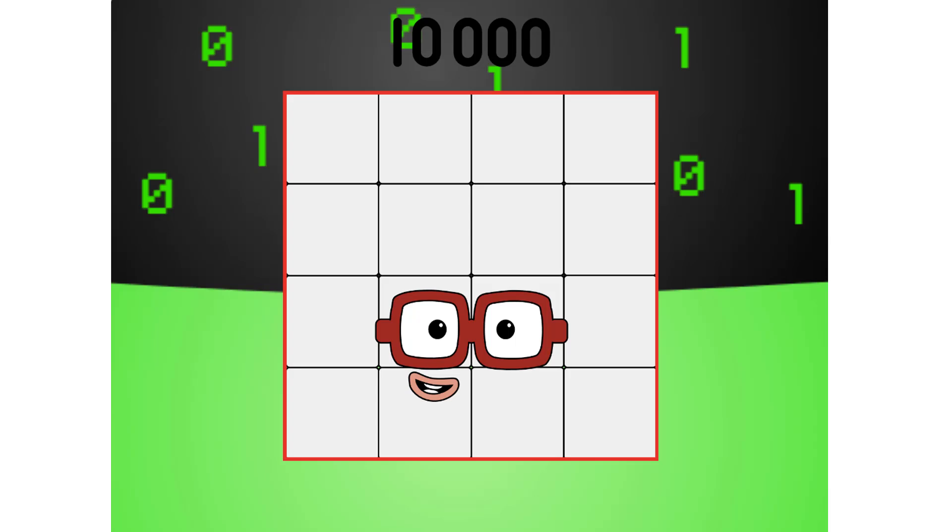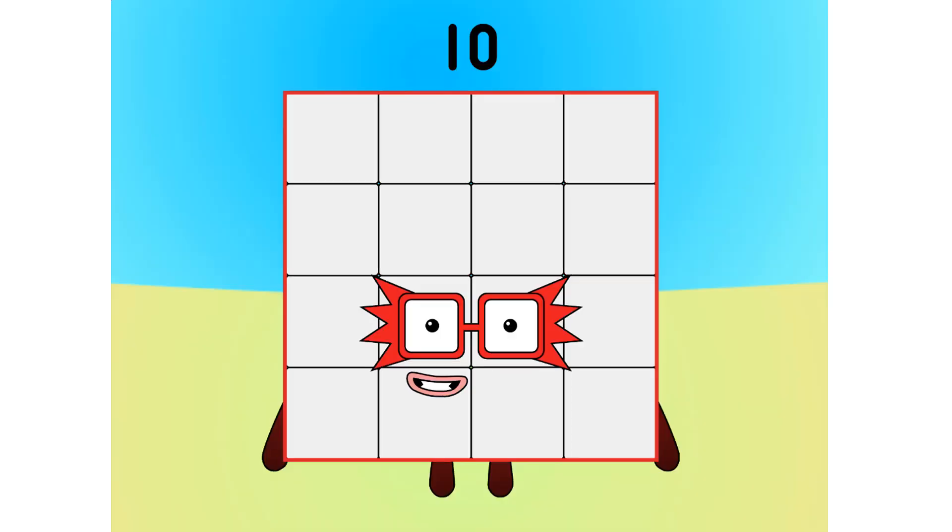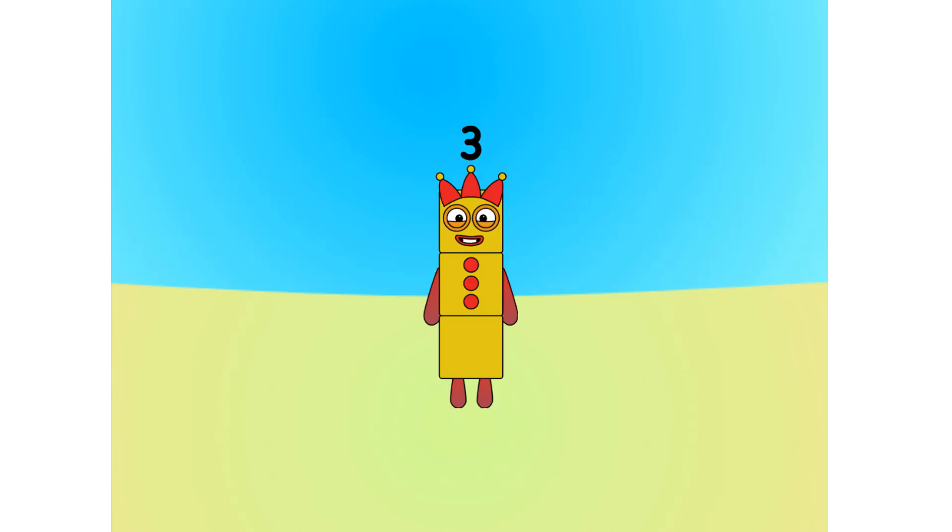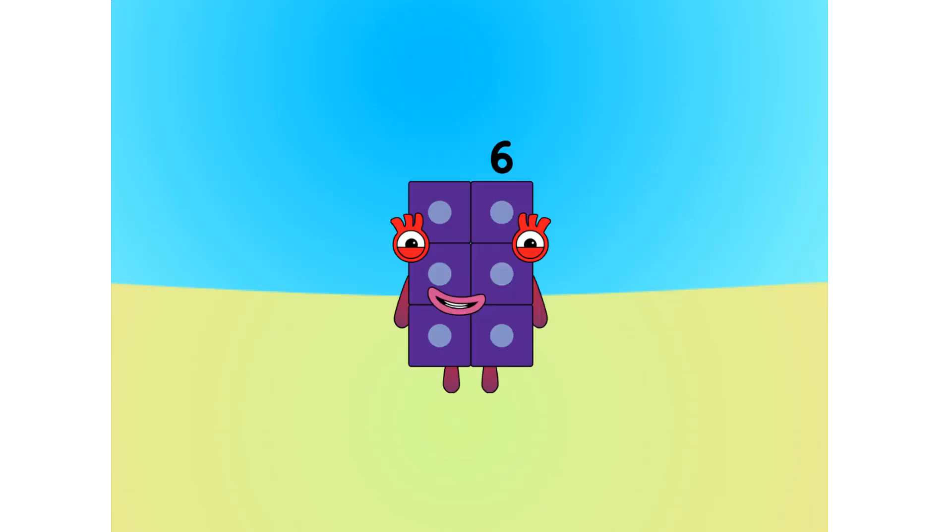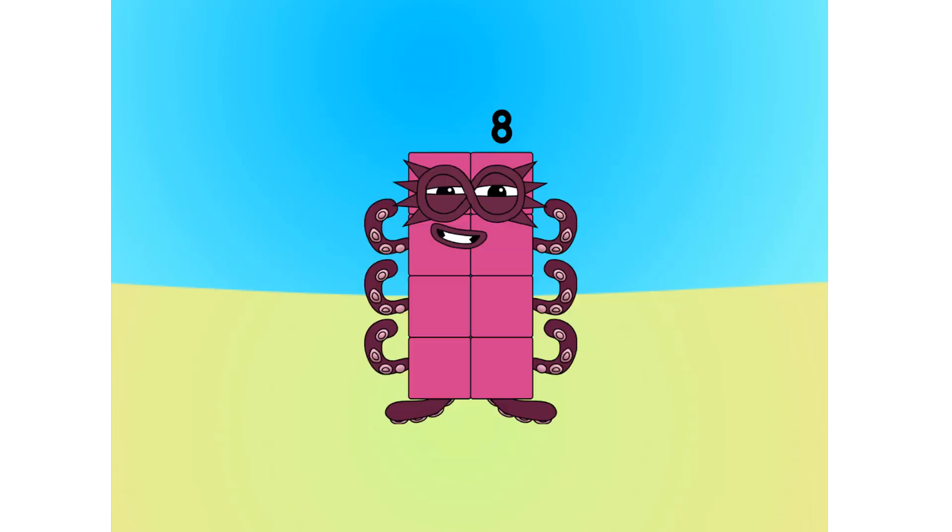Let's move on to the next base. This is base 16. Also known as hexadecimal or hex. If this is base 16, there needs to be 16 digits. 0, 1, 2, 3, 4, 5, 6, 7, 8, 9...